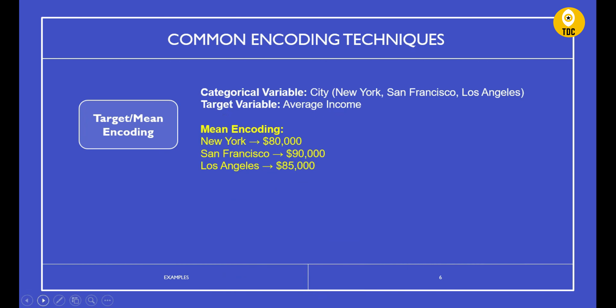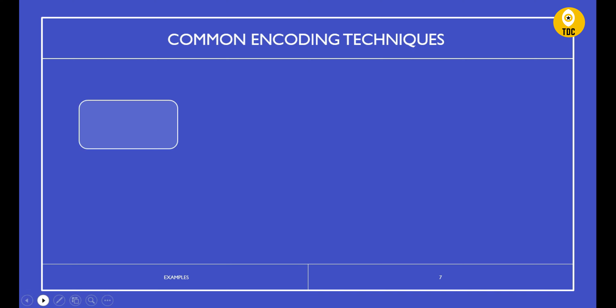Target mean encoding uses a target variable to encode a categorical column. For example, suppose you have a 'city' column and an 'income' column as your target variable. For each city, you calculate the mean income and assign that mean value as the encoding. So wherever the city is New York, the encoded value becomes $80,000, and wherever it is San Francisco, it becomes $90,000. This encoding is used in certain calculations based on different algorithms.